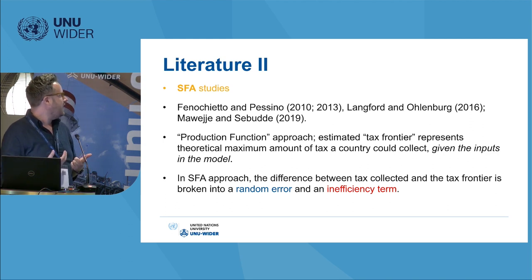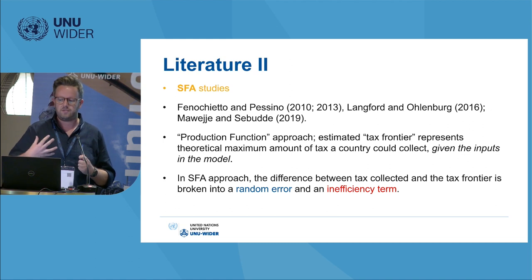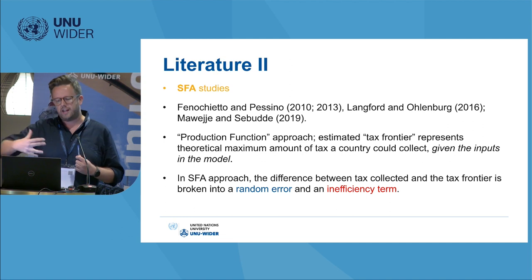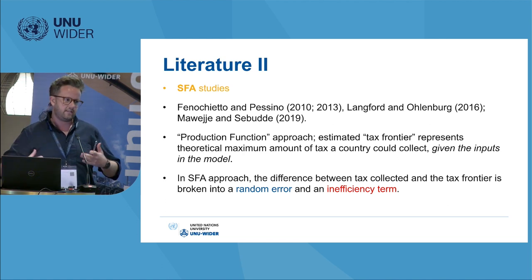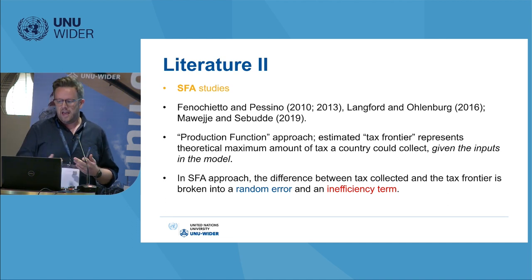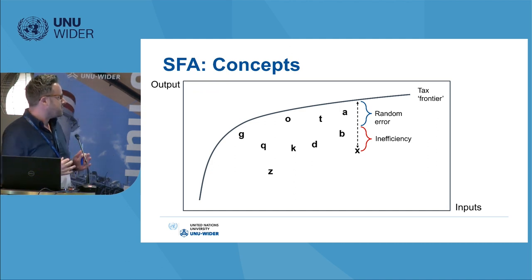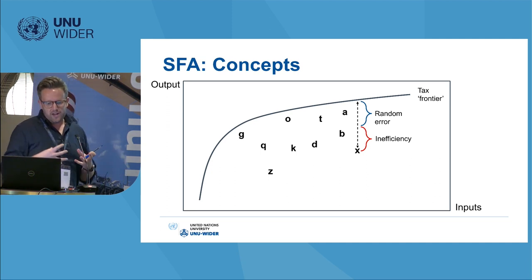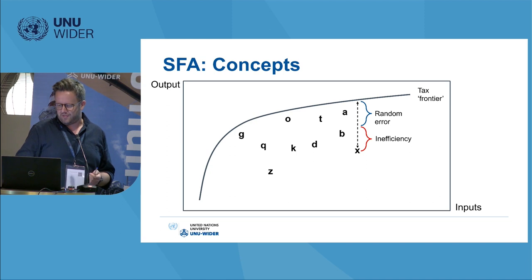This essentially models tax collection as a production function whereby the inputs are those underlying economic and social characteristics, and the model estimates a tax frontier — a modeled maximum amount of tax that a country could collect given those inputs. In this model, the difference between actual taxes collected in a given country and the theoretical modeled amount is broken into a random error term and an inefficiency component. In trying to model this in the most accurate way, we're attempting to hone in on that inefficiency component and ensure that random error doesn't creep into what we're actually estimating.